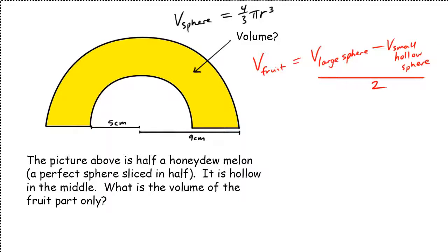So continuing on here, this equals the volume of the large sphere, so we're talking about 4 over 3 pi r cubed, minus the volume of the hollow sphere, which is 4 over 3 pi r cubed. And here the radius of the smaller sphere - don't get these mixed up - is 5, all divided by 2.